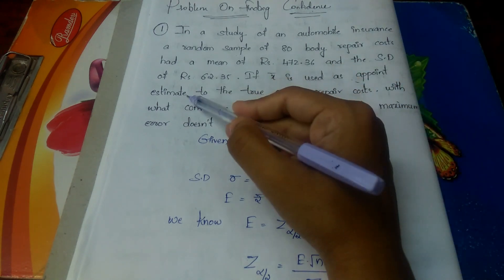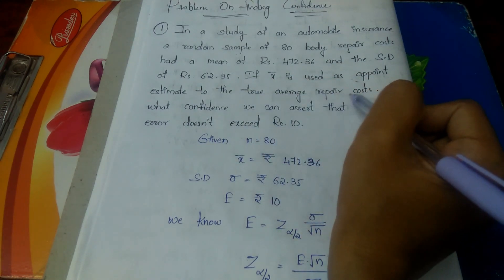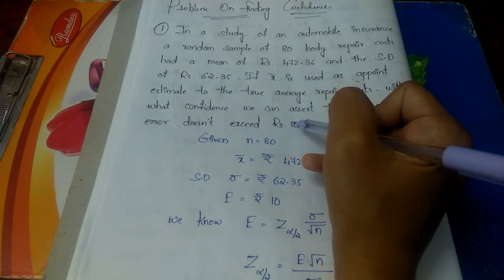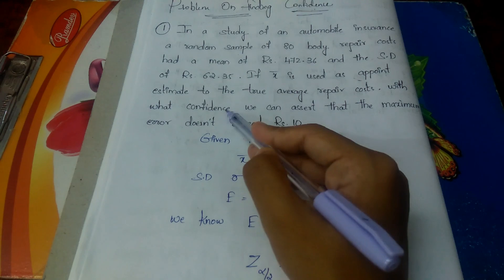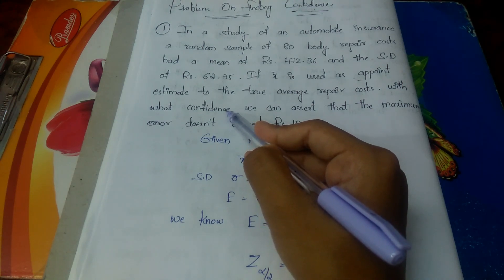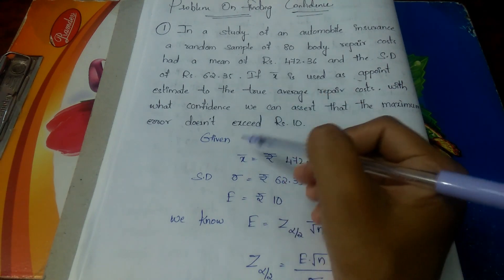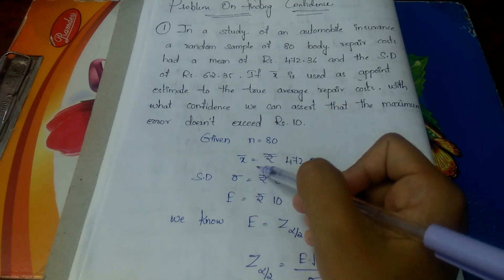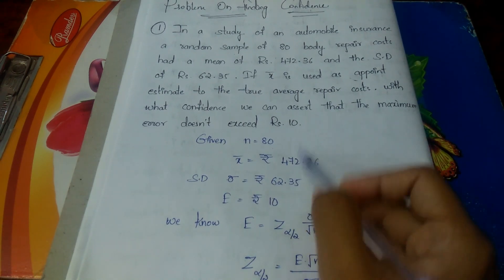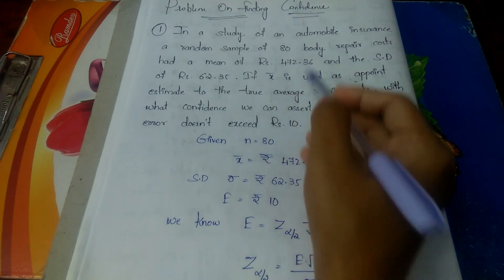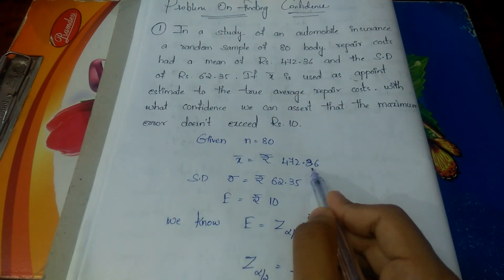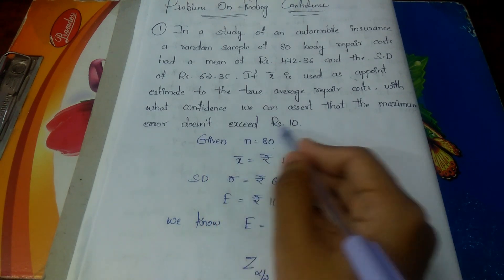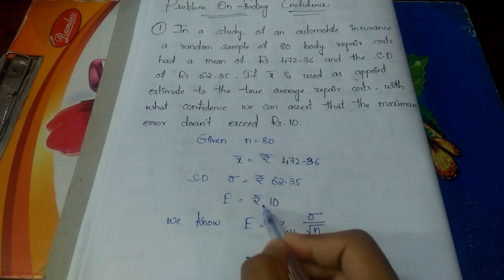If X bar is used as a point estimate to the true average repair cost, with what confidence can we assert that the maximum error does not exceed rupees 10? We need to find the confidence percentage. From the problem, the given information is: sample size n equals 80, X bar equals 472.36, standard deviation sigma equals 62.35, and the maximum error E equals rupees 10.